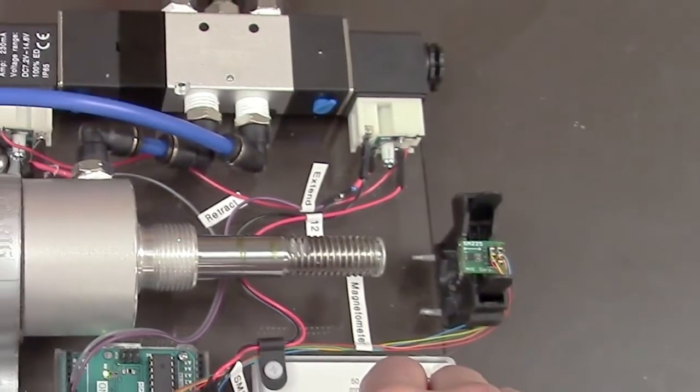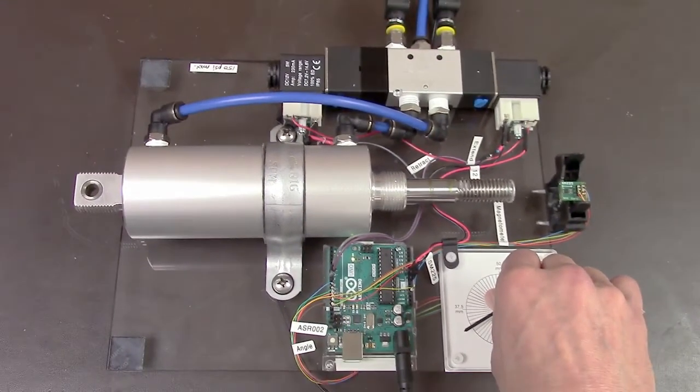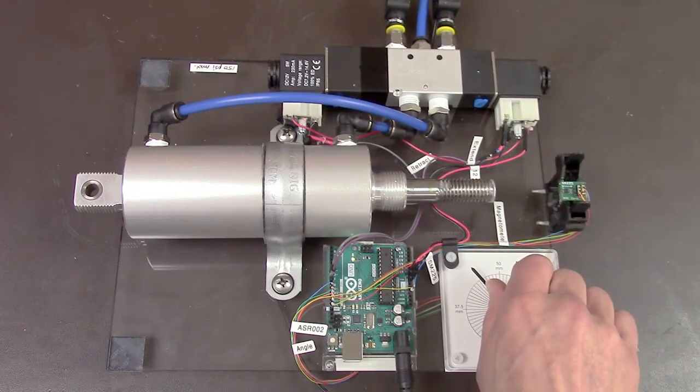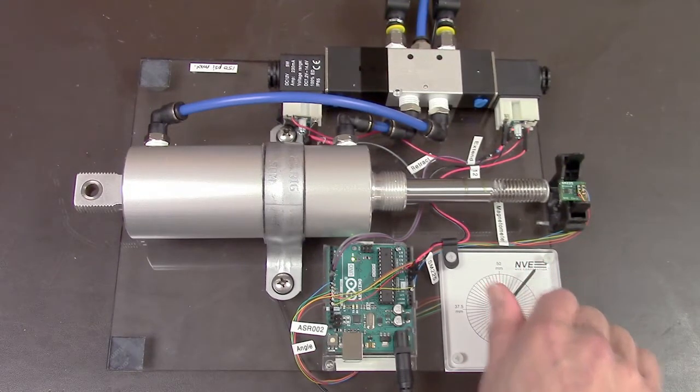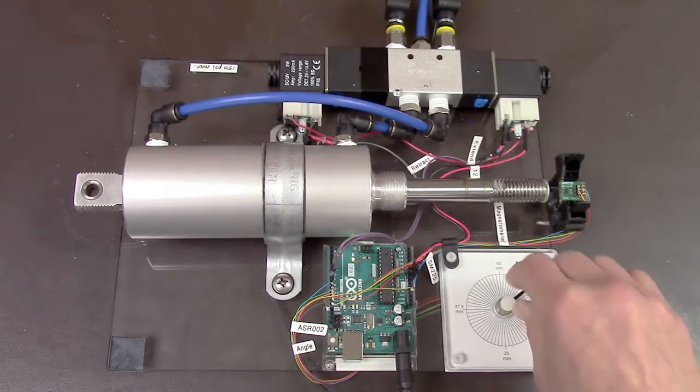The angle sensor detects the rotation of a magnetic knob and sets the desired position. The magnetometer's sensitivity and wide range gives us control over about a 50mm range.